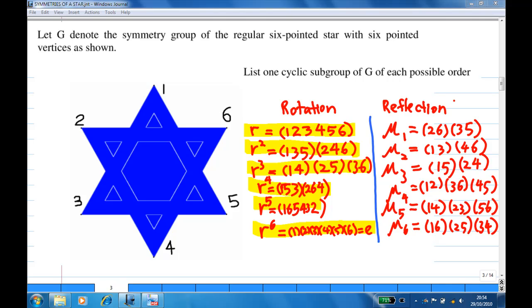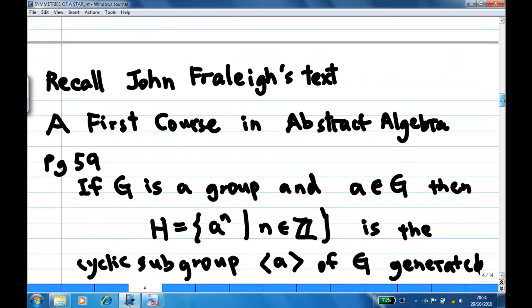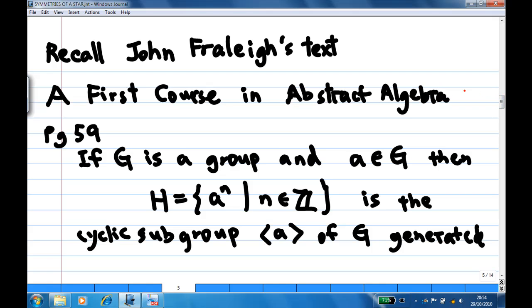Now, what does it mean by a cyclic subgroup of G? Based on John Fraleigh's text, A First Course in Abstract Algebra, page 59: If G is a group and a is an element of G, then H consists of a^n when n belongs to a set of integers, is a cyclic subgroup generated by a.